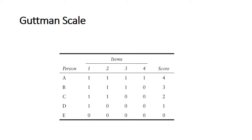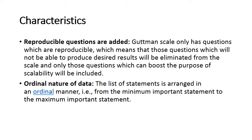This is how the scalogram looks. These are the respondents A, B, C, D, and E, and these are the items or questions. Respondent A agrees to all questions and gets a score of four. B agrees to three and scores three. C says yes twice and scores two. D says yes once and scores one. E disagrees with all statements and scores zero.